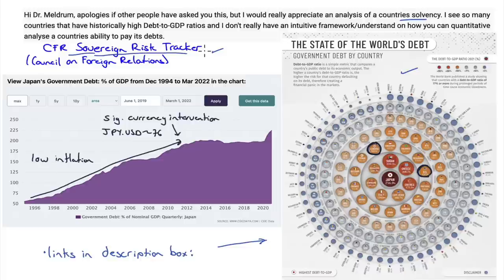We're not going to have the access to the information or the skill set to do credit analysis at a country level. It's best to let experts do that and ask if there's good secondary research we can refer to. Let's look at Japan's government debt as a percentage of GDP from 1994 to 2022. Japan was on fire throughout the 1980s with a property market where one foot of property in Tokyo was worth more than sometimes a whole building in New York.